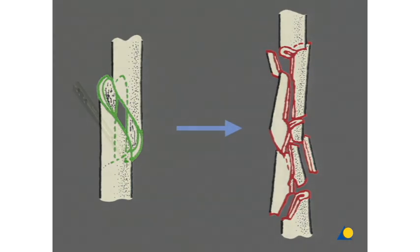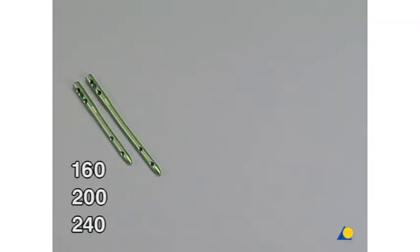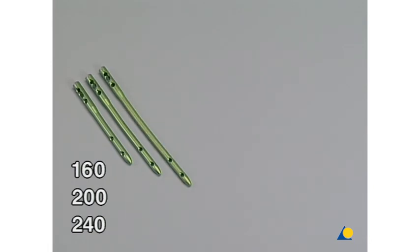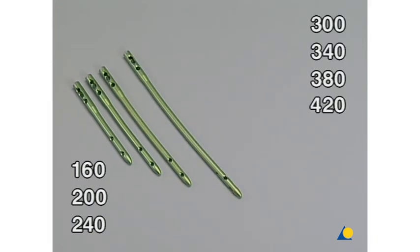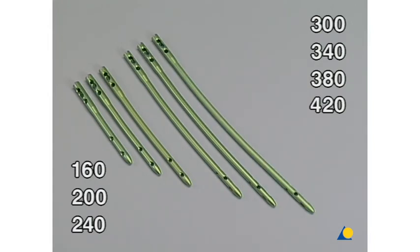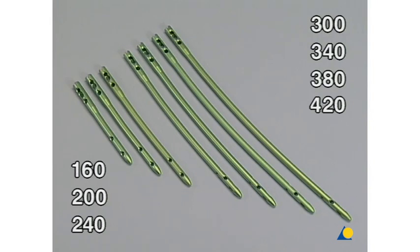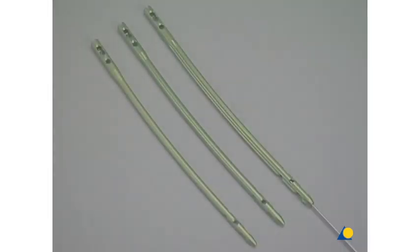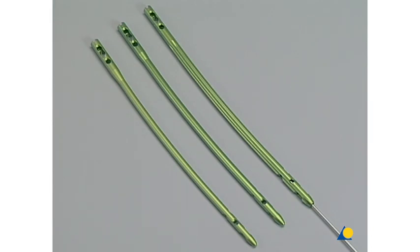The DFN is available in a short version with a length of 160, 200 or 240 mm and in a long version with a length of 300, 340, 380 or 420 mm. It comes as a solid nail with a diameter of 9 or 10 mm or as a cannulated 12 mm nail.